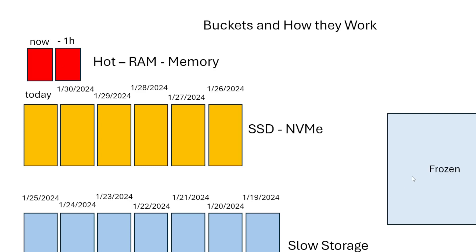The way buckets work is they are a time-based method — they basically store information based off of time. As new logs come in, it says this data fits within the last hour — oversimplification, it's never just down to an hour or a day, but we're going to say it's that way. A new log comes in and it says: oh, it's in this hour, you go in that bucket; it's two hours old, you go in that bucket; you're a day old, you go over in that bucket. Splunk keeps parsing them out into the different buckets as a way of distributing the data.